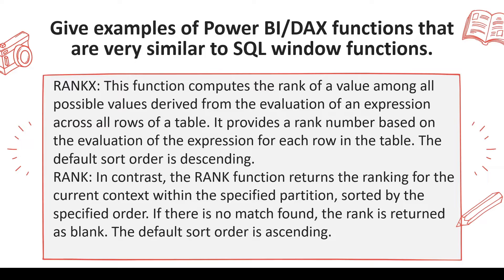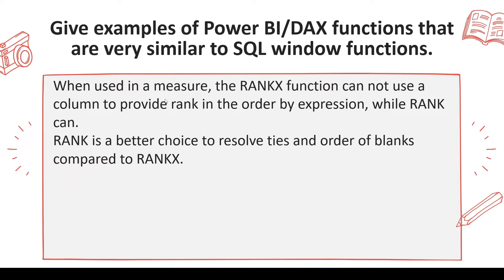So RANKX will compute the rank based on the expression provided, across all rows available in the table, and the default sort order is descending — meaning if you don't provide any sort order, it would be descending. RANK, in contrast, returns the ranking for the current context within the specified partition sorted by the specific order. If there is no match found, the rank is returned as blank. The default sort order for RANK is ascending.